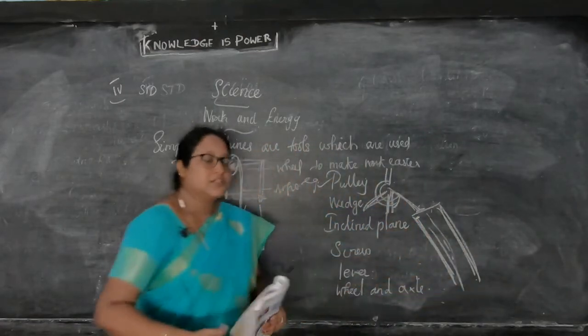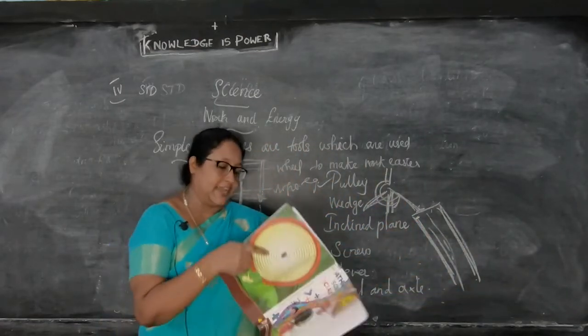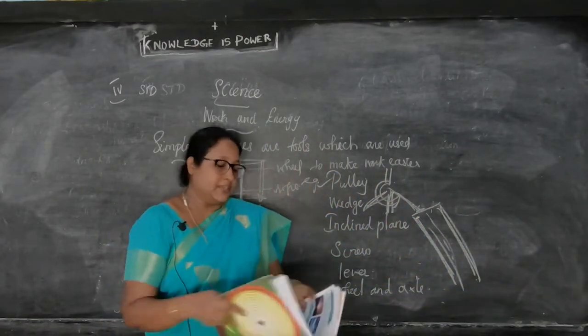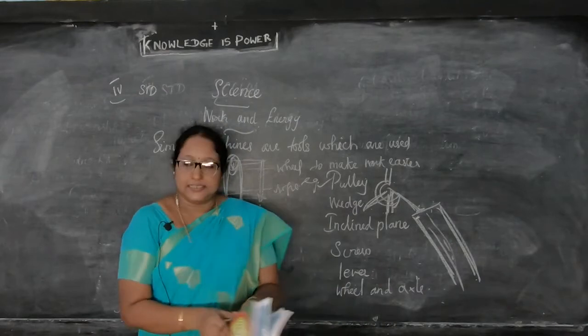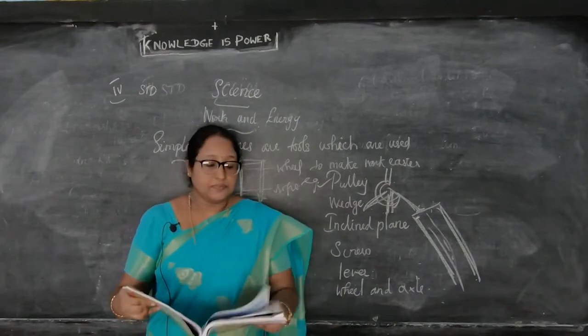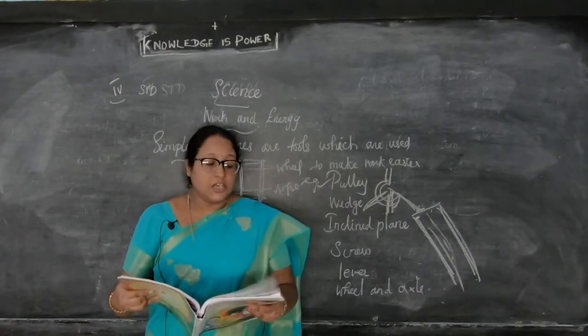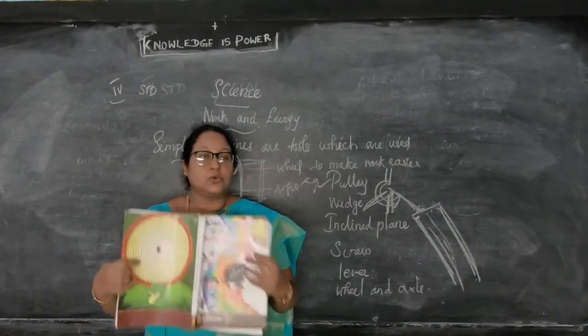So that is the inclined plane — one end is higher than the other. Next is the wedge. A wedge is a tool with a sharp edge which can be used to split materials.